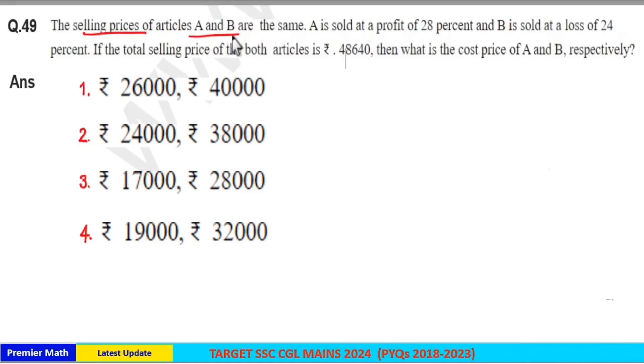The selling prices of articles A and B are the same. A is sold at a profit of 28% and B is sold at a loss of 24%. If the total selling price of both the articles is rupees 48,640, then what is the cost price of A and B respectively?